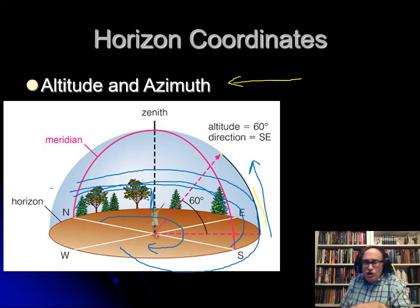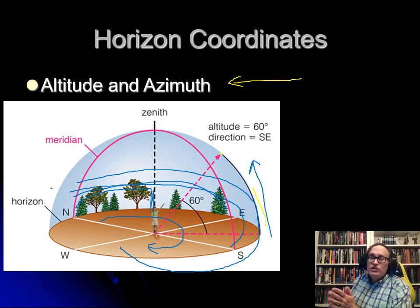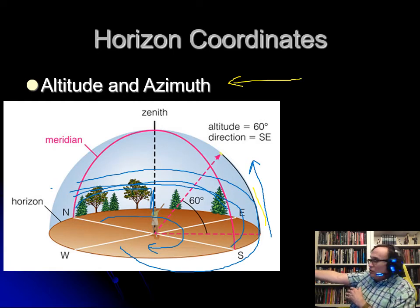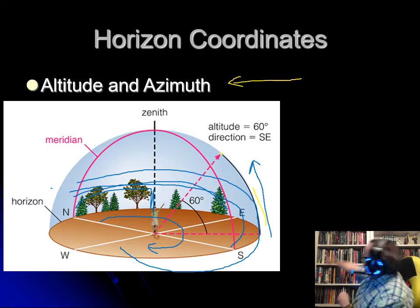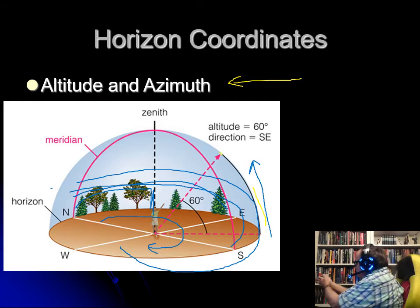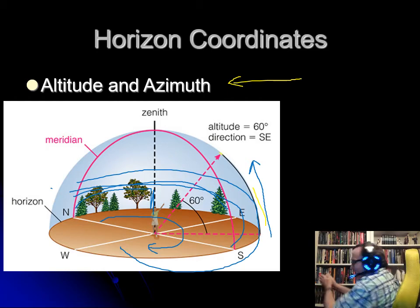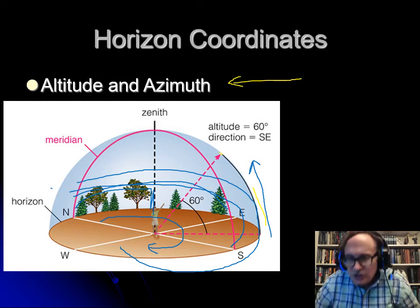Altitude is how high up. So if I told you, go out tonight and look at this really cool thing — it's going to be at an altitude of 60 degrees and an azimuth of 120 degrees. 90 degrees is due east, so 30 degrees more south of east is 120 degrees azimuth. 60 degrees altitude means two-thirds of the way up to straight up. So you'd face the azimuth of 120 degrees and look up 60 degrees. That's altitude and azimuth.